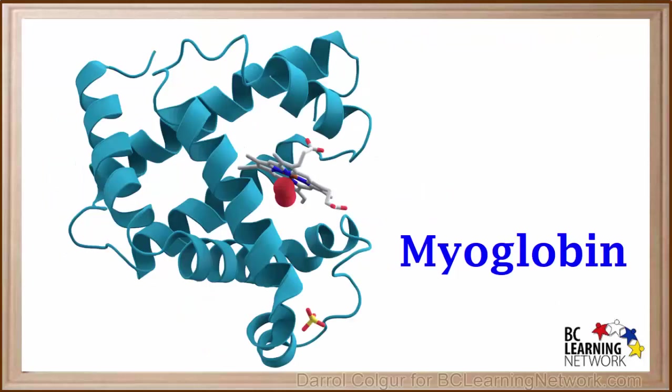Proteins have very complex structures. This is a diagram of the structure of myoglobin, a protein which stores oxygen in muscle tissues. This diagram shows what is called the tertiary structure of myoglobin, a three-dimensional rendering of coiled and non-coiled sections of this giant molecule.